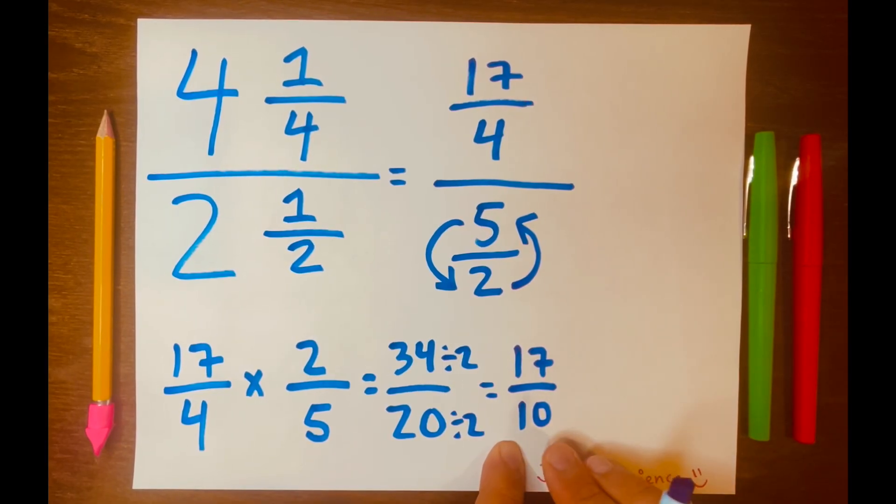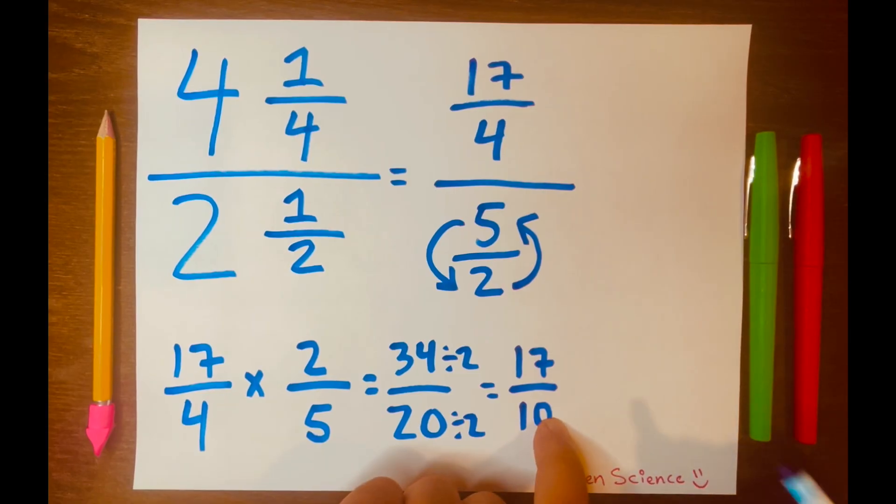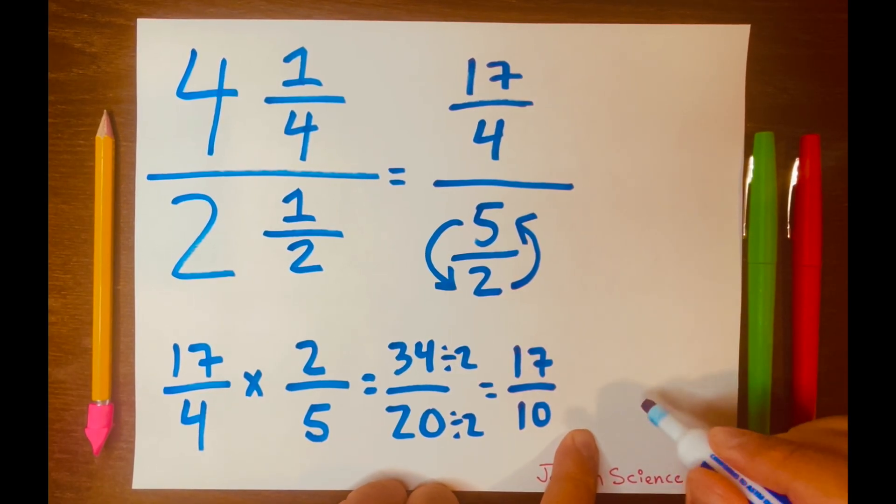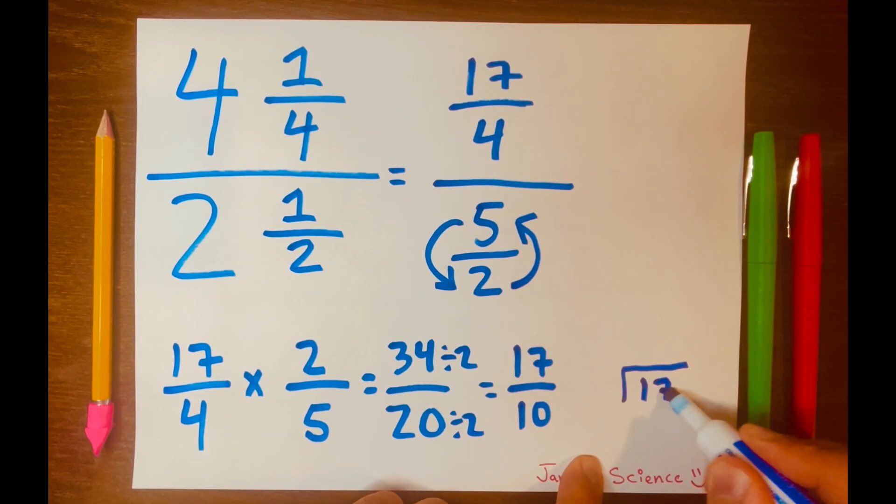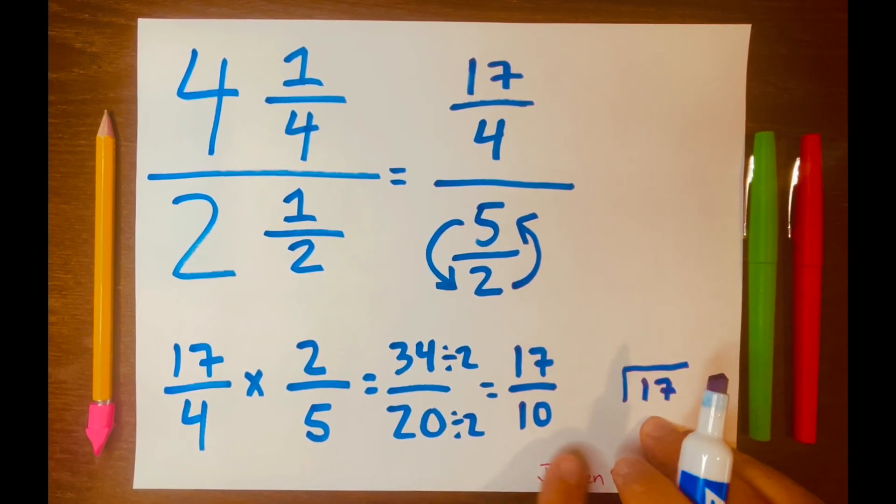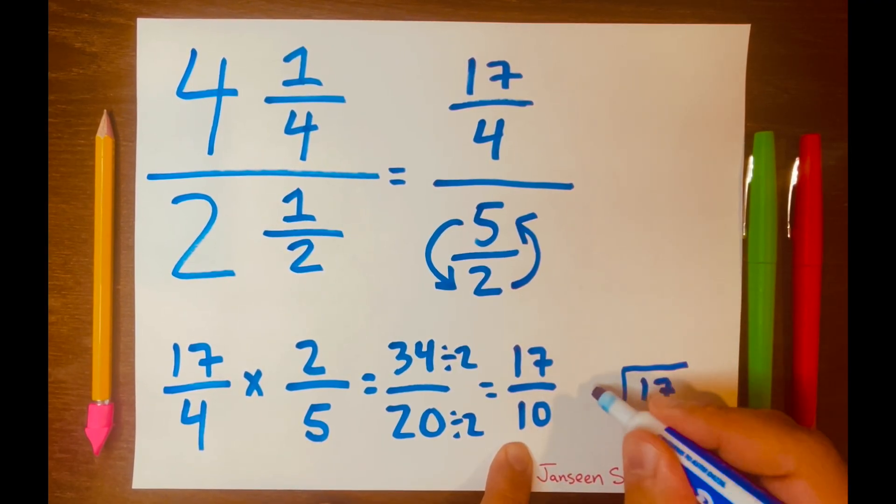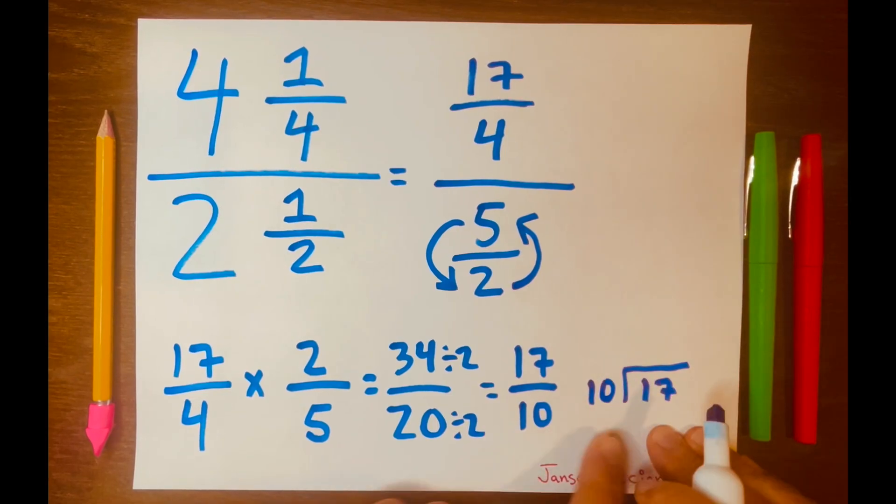So we can turn this answer, 17 over 10, to a mixed number. So let's go ahead and do that. And we need to do long division to do that. So 17 will be your dividend in long division, so it will go inside the long division symbol. And then the 10 will be the divisor, which will go outside the long division symbol.